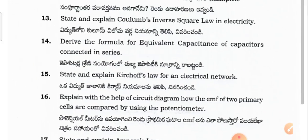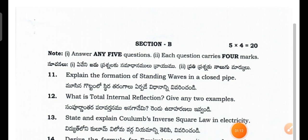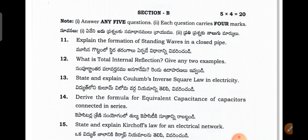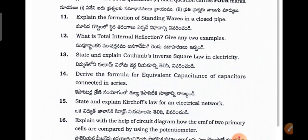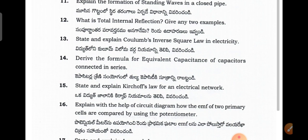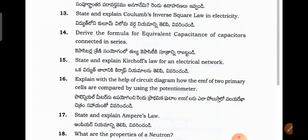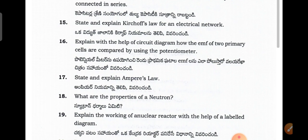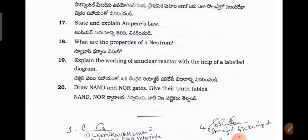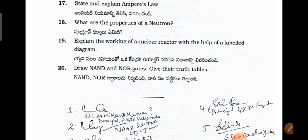Next, coming to Section B. Out of 10 questions you have to write any 5. These are four-mark questions. Topics include: formation of standing waves in a closed pipe, total internal reflection, formula for equivalent capacitance, Coulomb's inverse square law, Kirchhoff's laws with circuit diagram, Ampere's law, properties of the neutron, working of a nuclear reactor with a labelled diagram, and NAND and NOR gates.